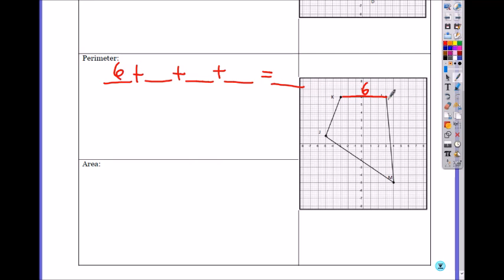What about this length right here? You have to use the Pythagorean theorem. It is one, two, three, four, five, six, seven, eight, nine, ten, eleven, and one.